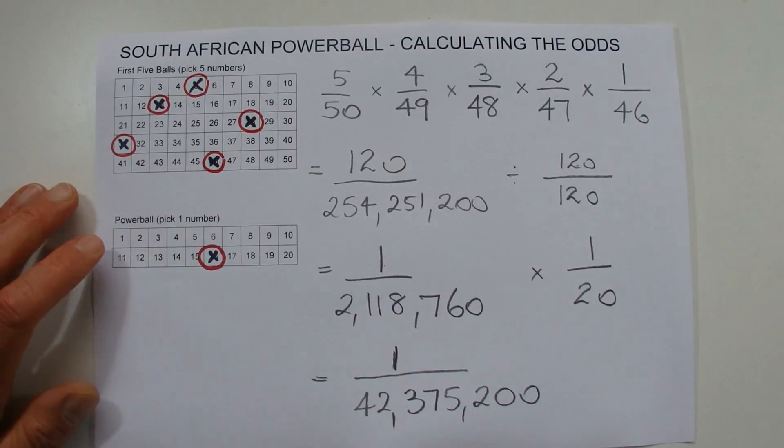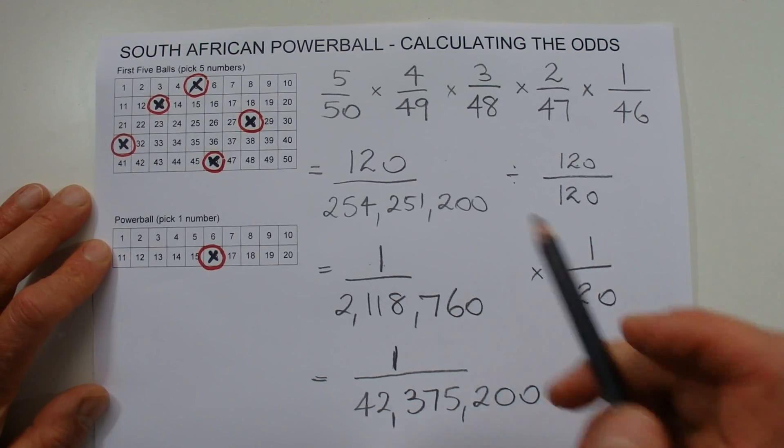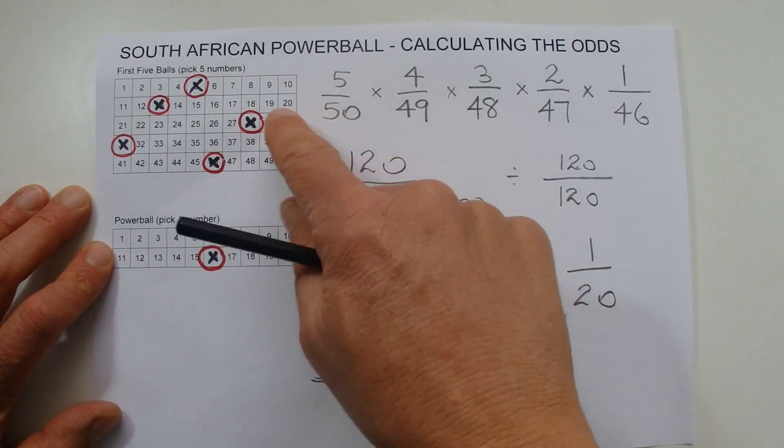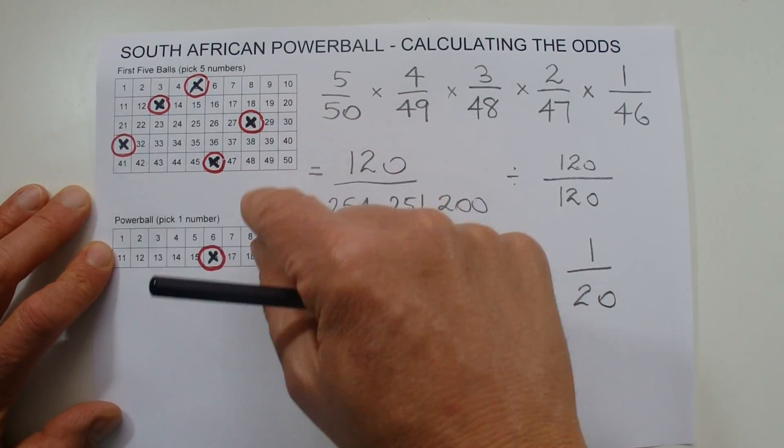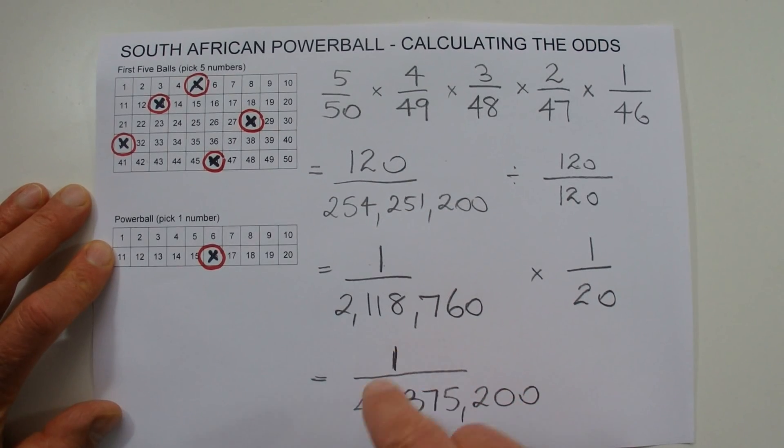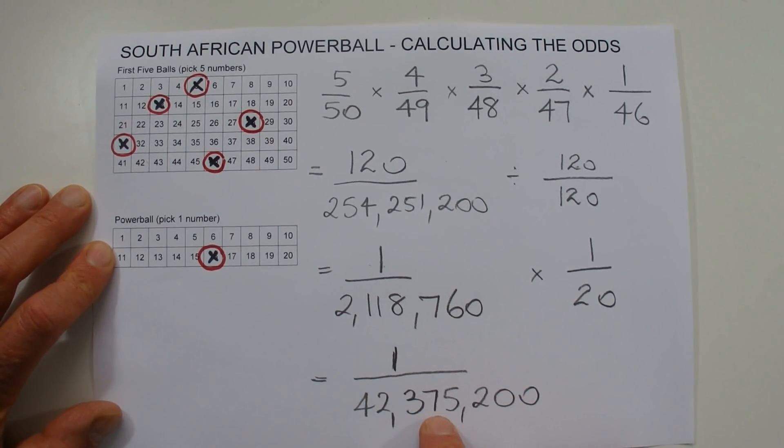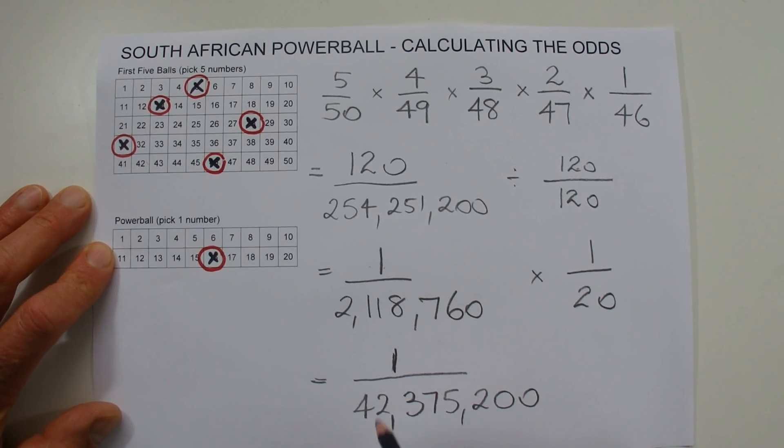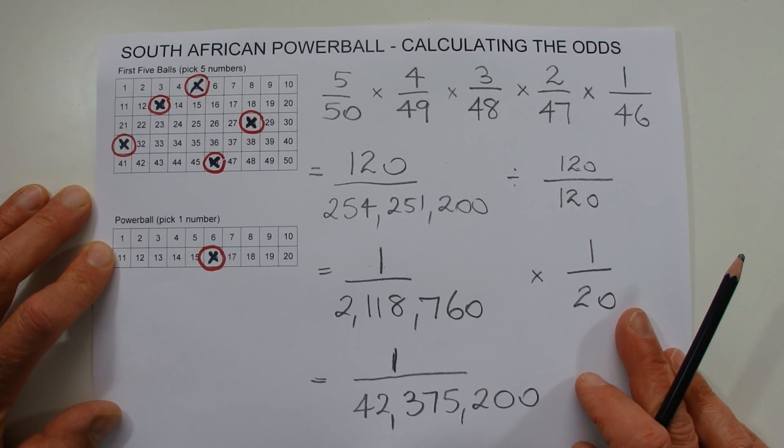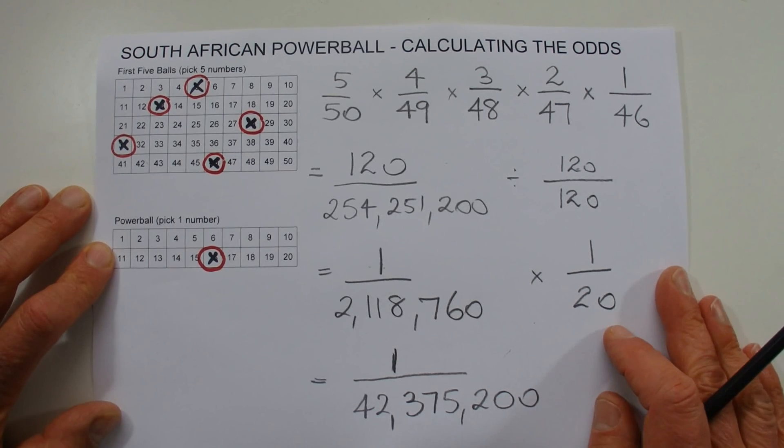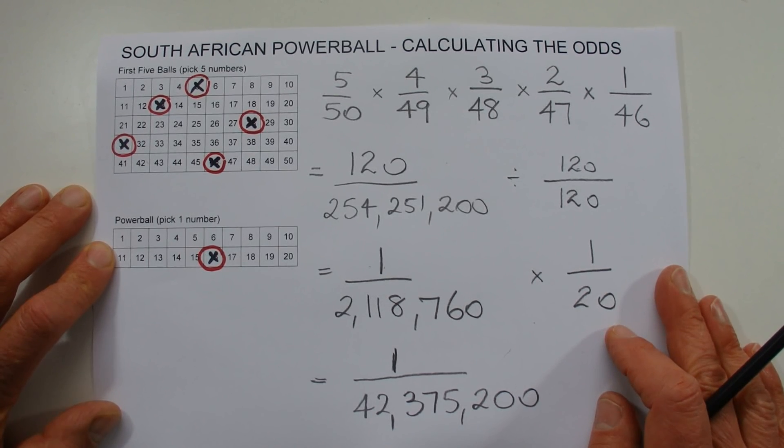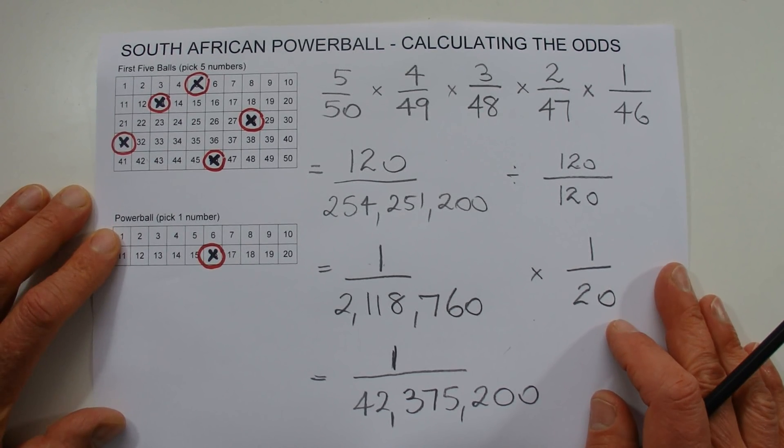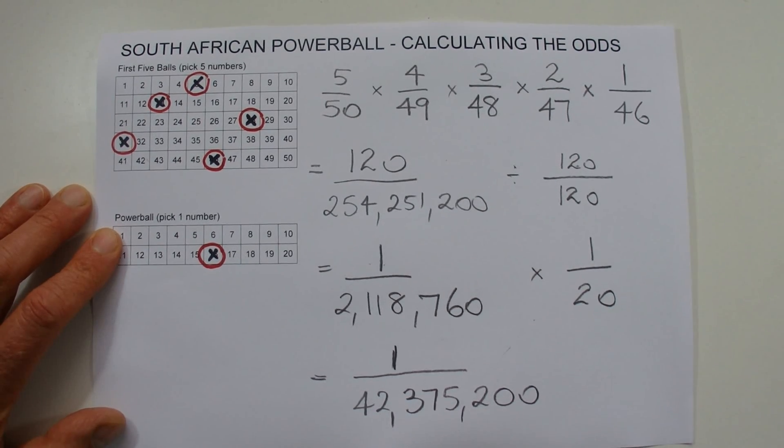So there we go, that's the odds of winning South African Powerball, winning the first prize by picking the five numbers and the Powerball in one game: one chance in 42,375,200. And you can Google that and you can see that is actually the answer. Well, I hope you've enjoyed this video. I hope you found it interesting and entertaining. Thanks for watching and goodbye for now.